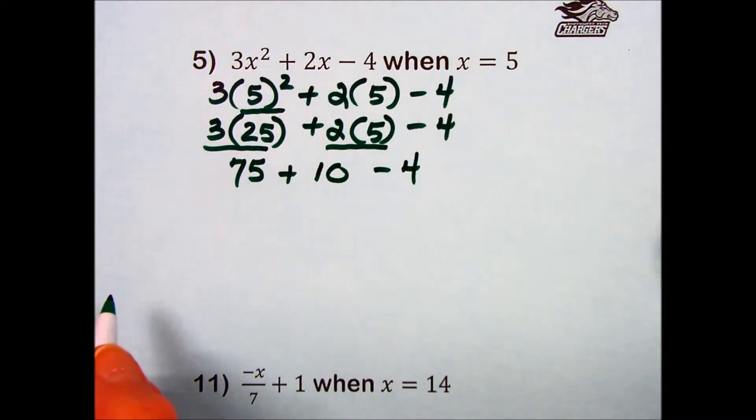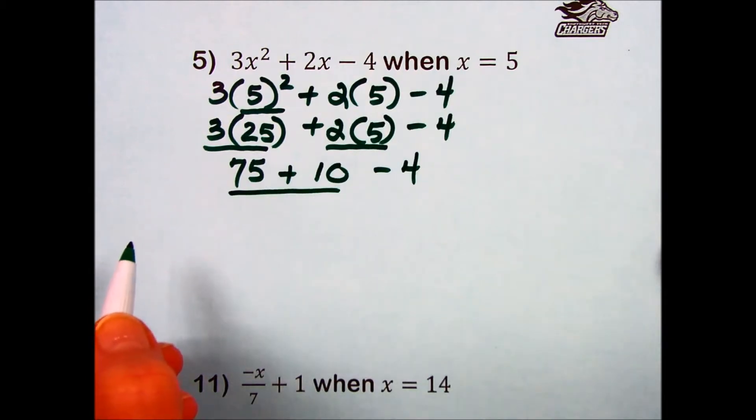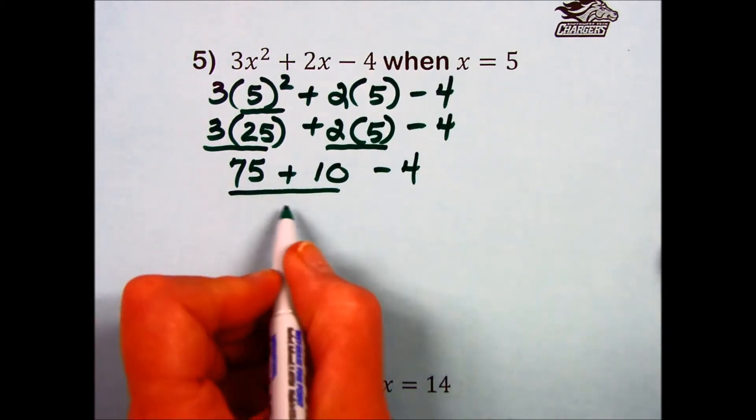Writing the remainder of the expression. Now we have the lowest priority in the order of operations. It's addition and subtraction, and we solve those following left to right. So addition comes first. 75 plus 10 is 85.